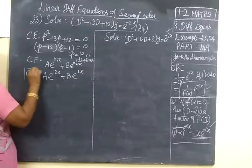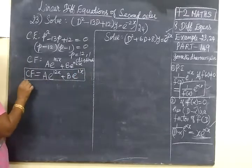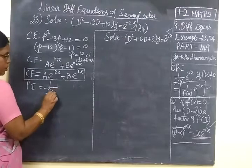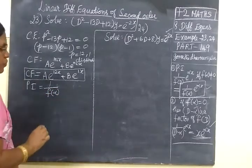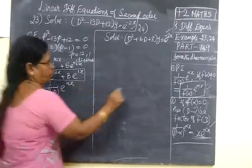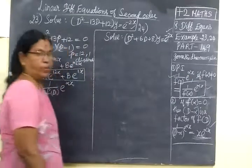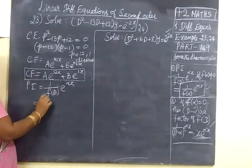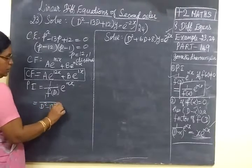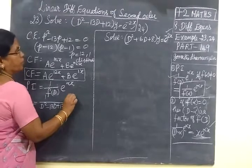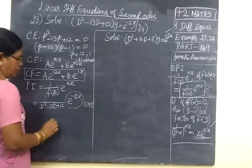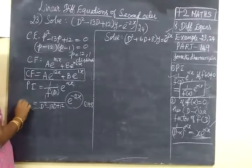So the complementary function equals a e power 12x plus b e power 1x. We have found the complementary function. Next we have to find the particular integral. The formula is 1 by f of d, e power alpha x. Here f of d is nothing but the operator from the equation itself, so 1 by d squared minus 13d plus 12, then e power minus 2x. This is on the right hand side of the equation.